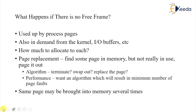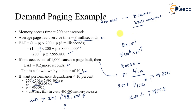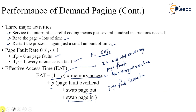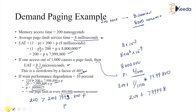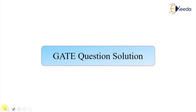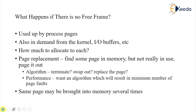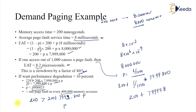This is the performance analysis of demand paging. The effective access time formula is the key result, along with the various events that can occur during a page fault. We are done with this part. In the next section, we are going to solve a few GATE questions related to this topic. That's all for this section on effective access time — now let's apply this concept and solve a few problems.